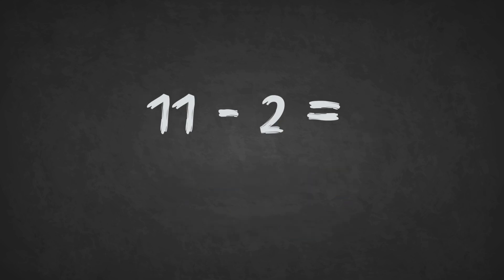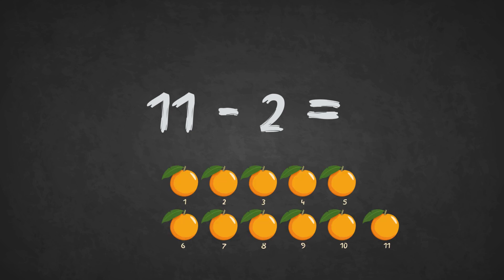11 minus 2 equals? 1, 2, 3, 4, 5, 6, 7, 8, 9. The answer is 9.